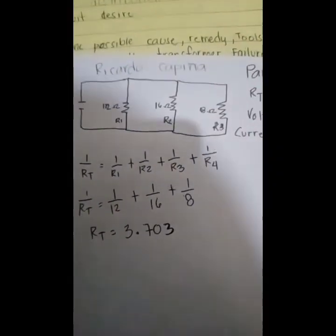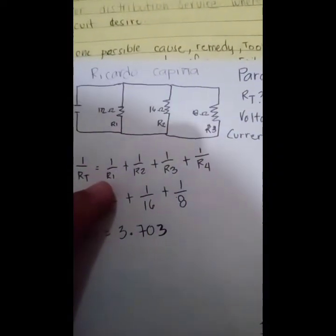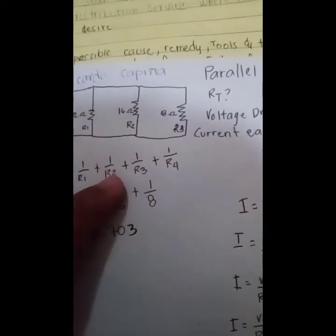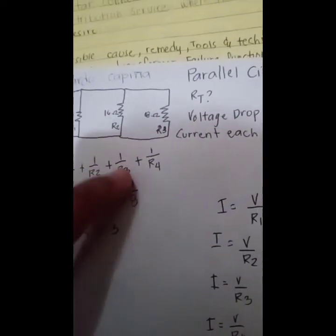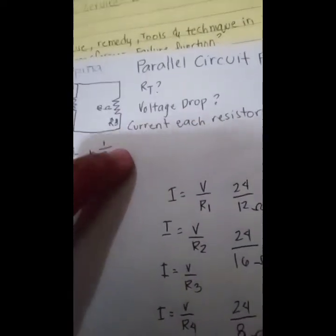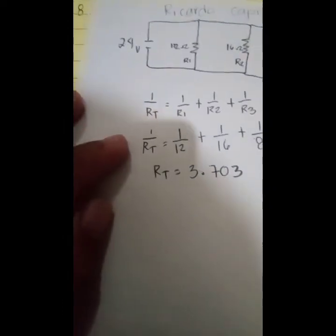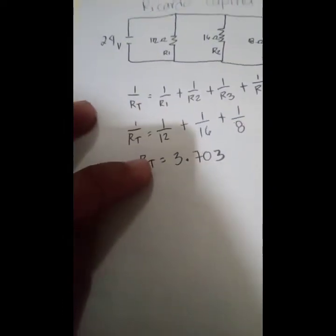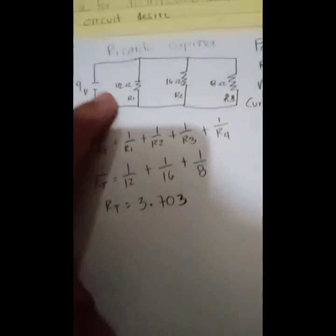For the parallel circuit, the formula for R total is: 1 over R total equals 1 over R1, plus 1 over R2, plus 1 over R3, plus 1 over R4, and so on and so forth. To find the R total, we substitute: 1 over R total equals 1 over 12.